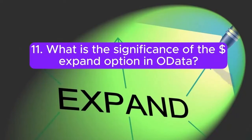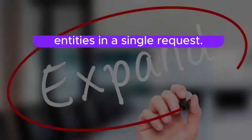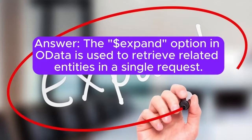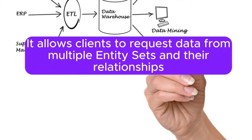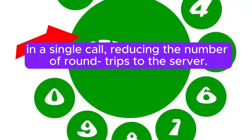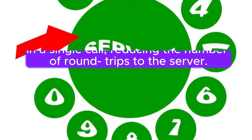Question 11: What is the significance of the expand option in OData? The expand option in OData is used to retrieve related entities in a single request. It allows clients to request data from multiple entity sets and their relationships in a single call, reducing the number of round trips to the server.